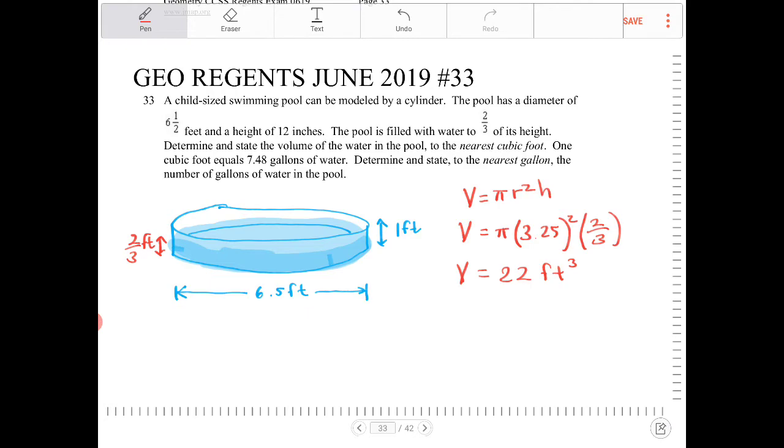One cubic foot equals 7.48 gallons of water. So with 22 cubic feet, what are we going to do? Multiply by 7.48 or divide by 7.48? Well, I want the cubic feet to cancel.